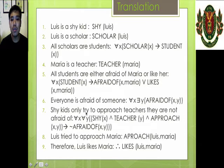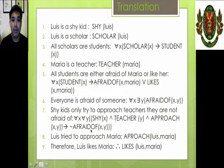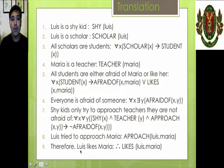Shy kids only try to approach teachers they are not afraid of — for all X and for all Y, if X is shy and Y is a teacher and X approaches Y, then it is not the case that X is afraid of Y. Luis tried to approach Maria — approach(Luis, Maria). Therefore, Luis likes Maria — likes(Luis, Maria). These are the translations.